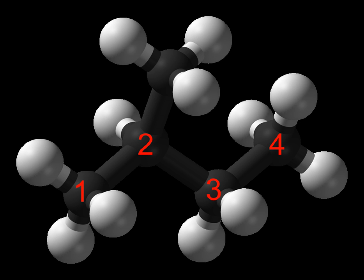In NMR spectroscopy, the proton resonances of alkanes are usually found at δH = 0.5–1.5. The carbon-13 resonances depend on the number of hydrogen atoms attached to the carbon: δC 8–30 for primary (methyl, CH3); 15–55 for secondary (methylene, CH2); 20–60 for tertiary (methine, CH); and quaternary carbons. The carbon-13 resonance of quaternary carbon atoms is characteristically weak due to the lack of nuclear Overhauser effect and the long relaxation time, and can be missed in weak samples.